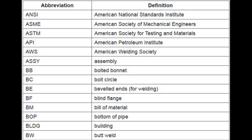ANSI stands for American National Standards Institute. ASME stands for American Society of Mechanical Engineers. ASTM stands for American Society for Testing and Materials. API stands for American Petroleum Institute. AWS stands for American Welding Society. ASSY stands for Assembly.